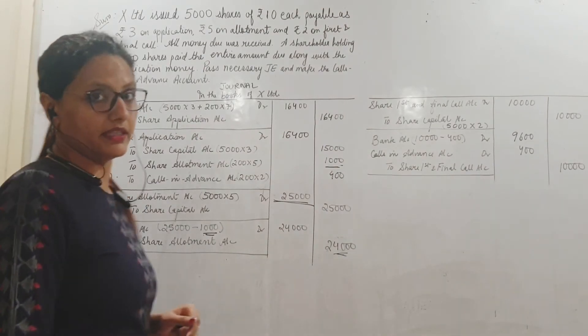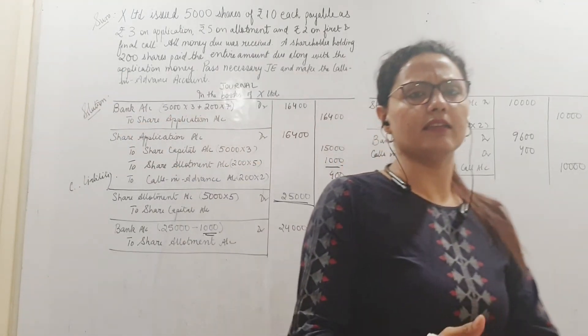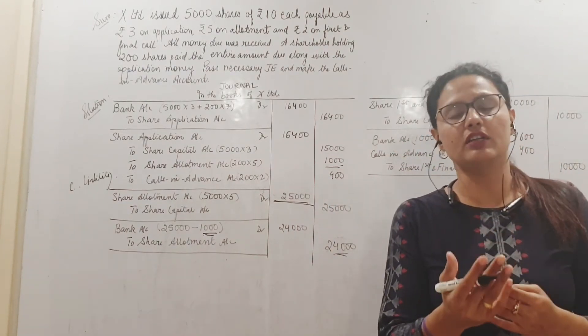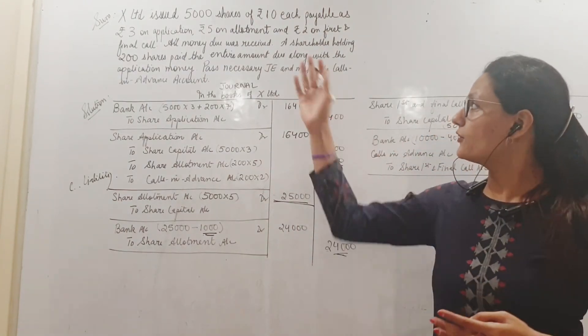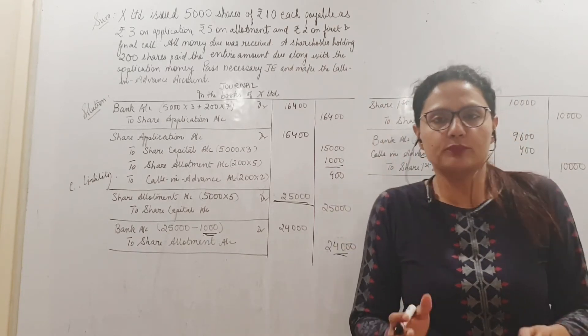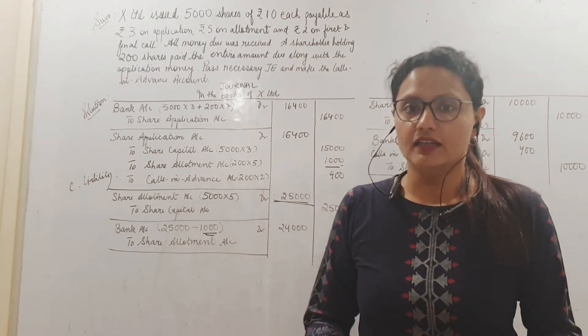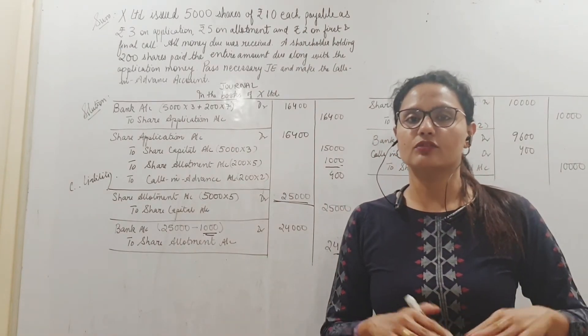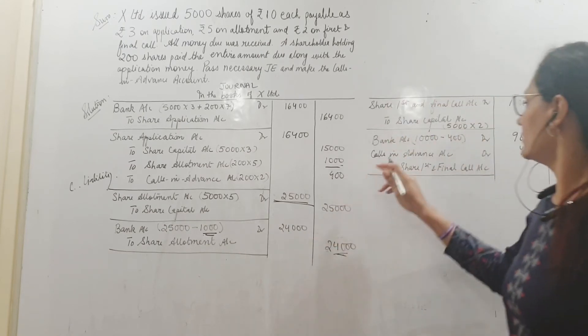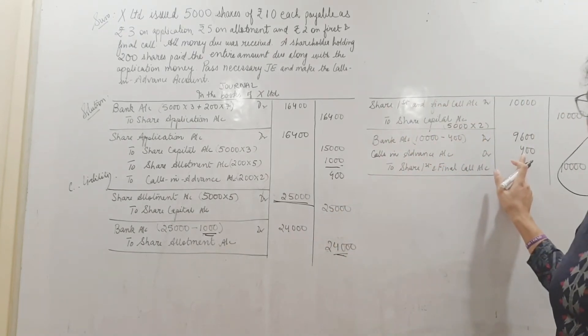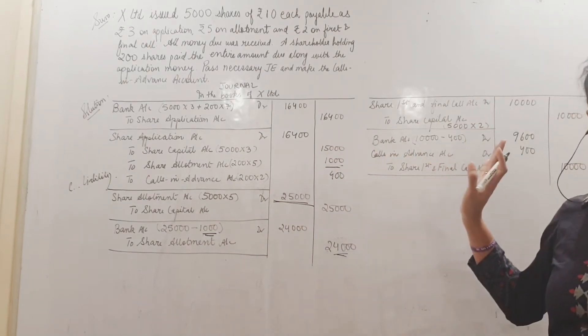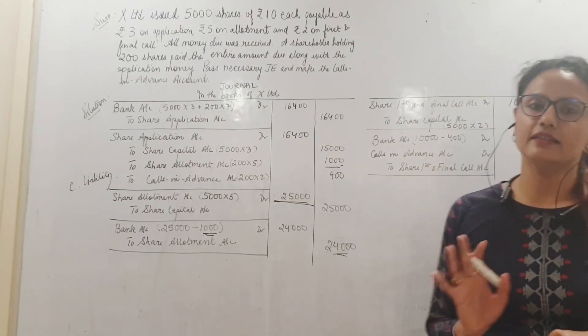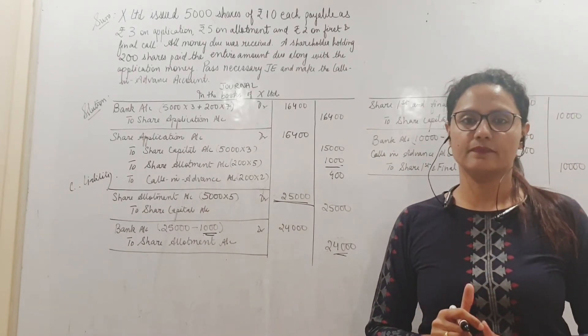Calls in advance is a short term, a current liability for me. Because it will not remain a liability because I have already told the shareholders to call and pay. Apart from this shareholder everyone is supposed to pay me. So now there is no concept of advance anymore. He has paid me money. He is supposed to pay me right now. So that liability is gone. So this is to write off the liability. So calls in advance account has been closed. This is done and share final call has been credited with 10,000. That is also closed.